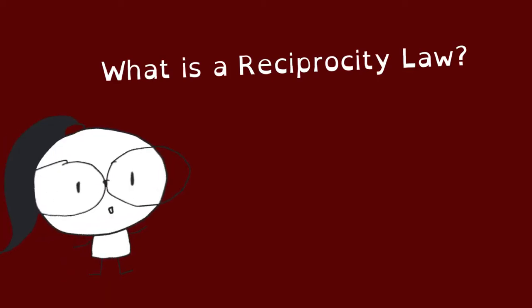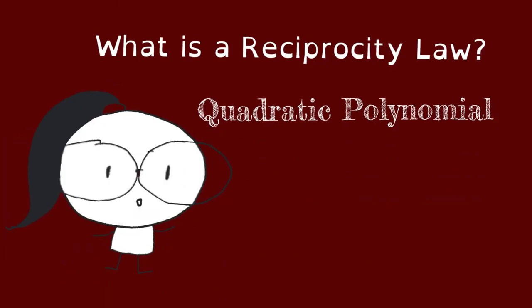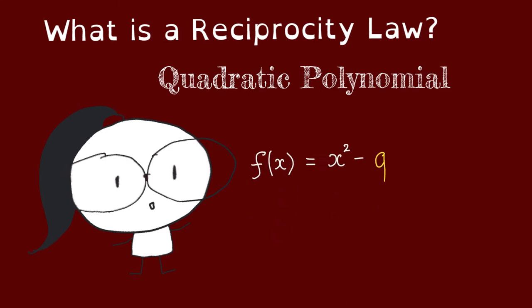Let's look at an example of a reciprocity law in the case of a quadratic polynomial. Let's take f to be x squared minus q, where q is a prime.